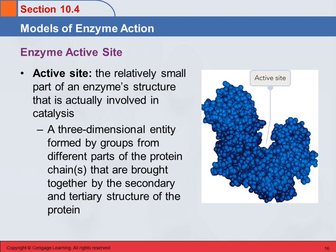This looks like a bunch of little spheres jammed together, but that is one or more protein chains with all these amino acids linked together. They fold around on themselves — remember the alpha helices and the beta pleated sheets — with hydrogen bonds and different interactions holding them all twisted up on each other. That forms this little region called the active site.